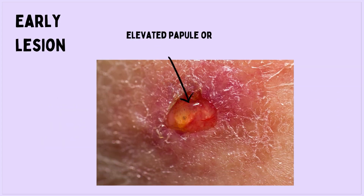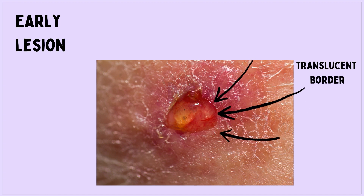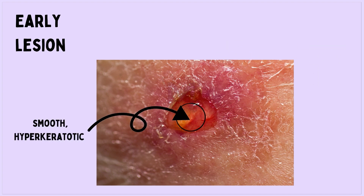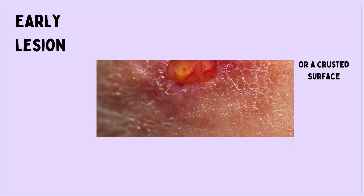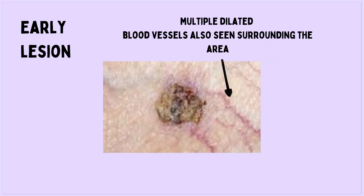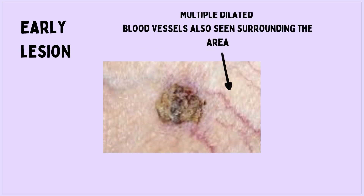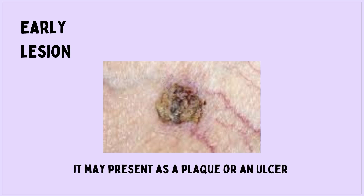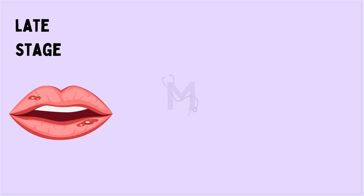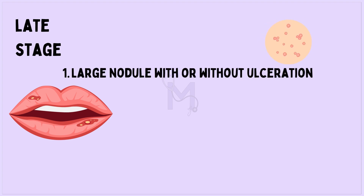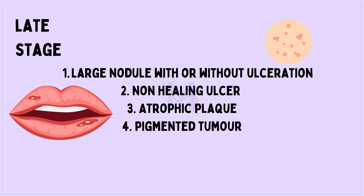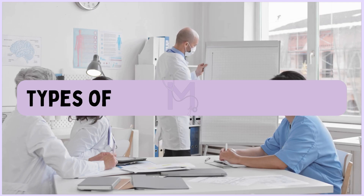The early lesion is a slightly elevated papule or nodule with a translucent border and a smooth, hyperkeratotic, or crusted surface. Multiple dilated blood vessels are seen surrounding the area. It can also present as a plaque or small ulcer. In the later stage, tumors may appear as a large nodule with or without ulceration, a non-healing ulcer, an atrophic plaque, or a pigmented tumor.